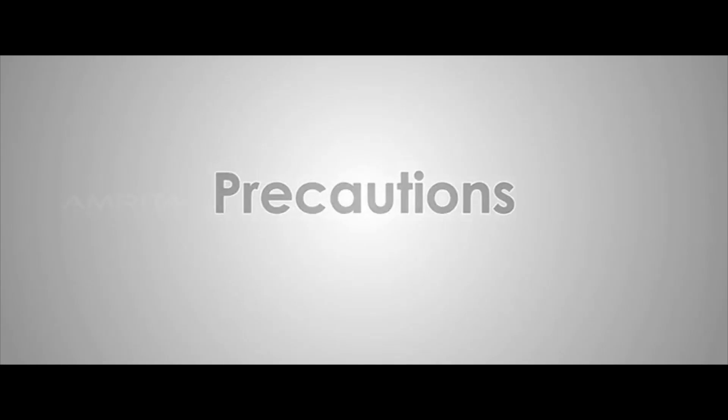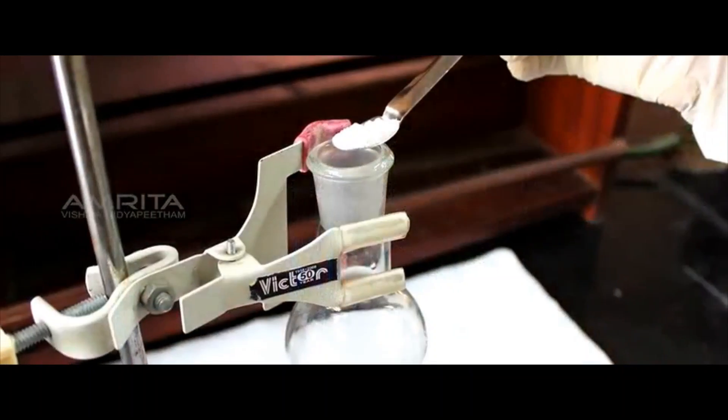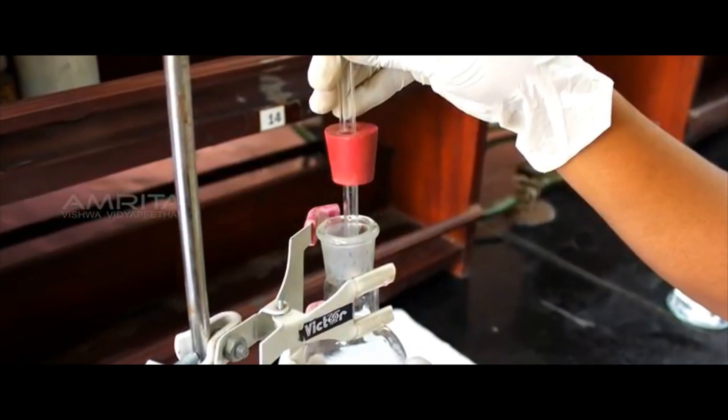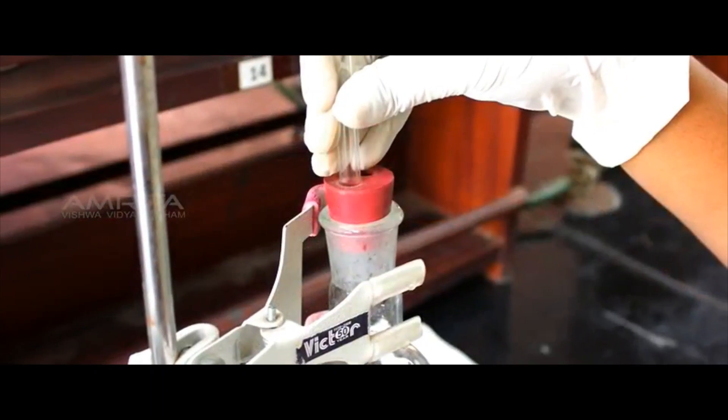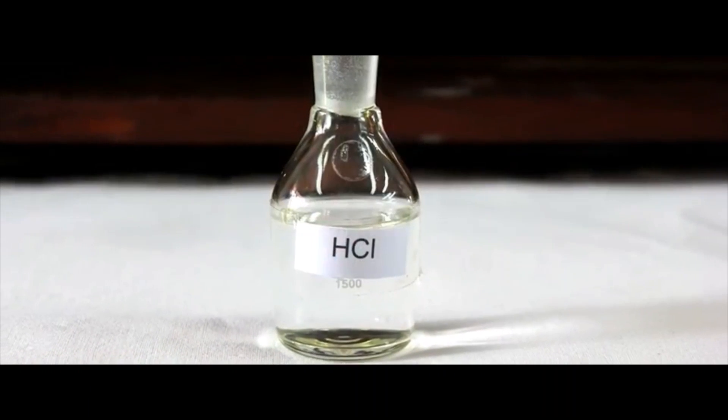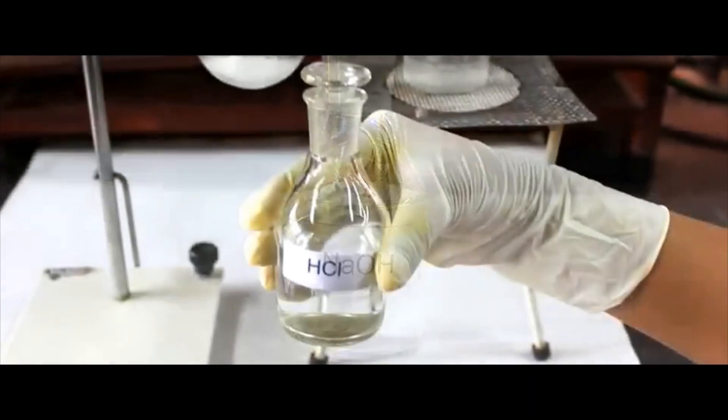Precautions: Add HCl to sodium carbonate only after making the apparatus air tight, otherwise the gas evolved in the reaction will escape through the gap. Handle the chemicals HCl and NaOH carefully as they are harmful.